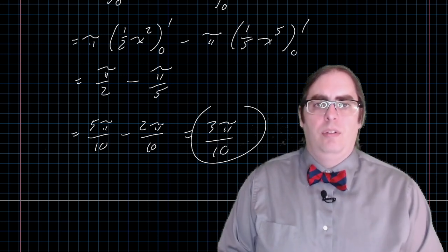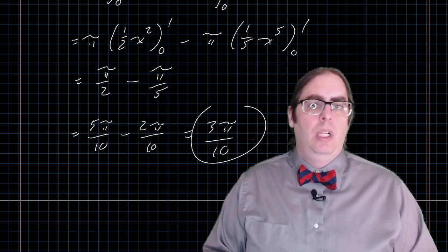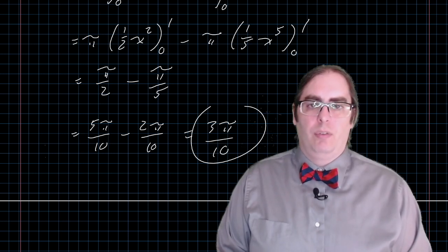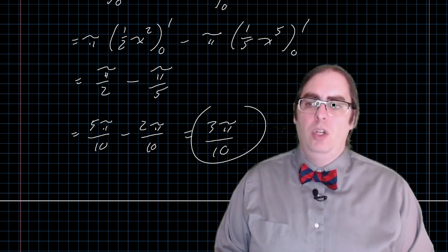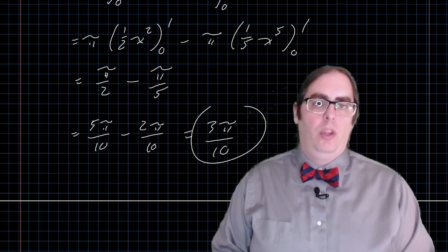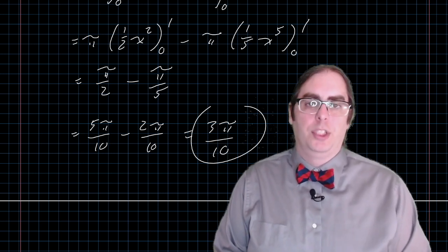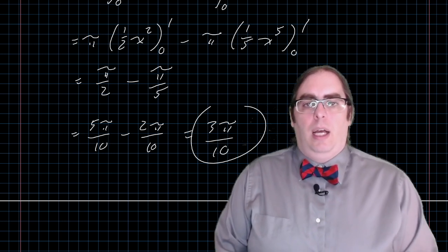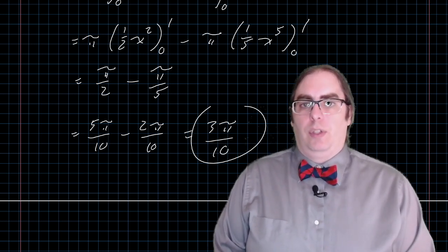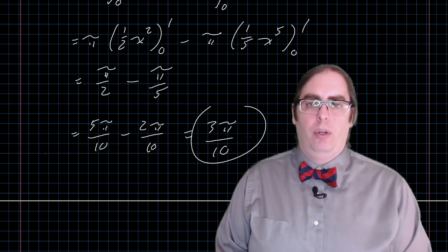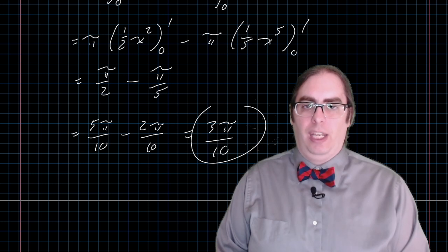In general, the formula for calculating the volume of a solid of revolution using the disk method, or when there's a hole in the middle, we call this the washer method, because a disk with a hole in it is a washer. The formula for working with that is usually fairly straightforward. It's usually not that bad to use, although there are, of course, always corner cases.